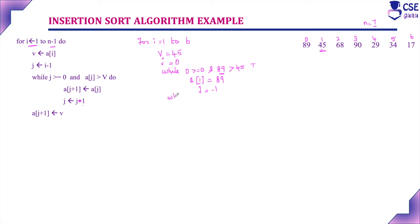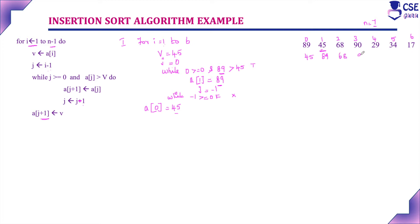Next iteration of the while loop: j is minus 1, which is not greater than or equal to 0, so the condition fails. The loop exits and executes the outer statement: A of j plus 1 — j is minus 1, so minus 1 plus 1 equals 0 — A of 0 position is assigned v, which is 45. So at the end of the first iteration, A of 0 is 45 and A of 1 is 89. The remaining elements 68, 90, 29, 34, and 17 stay as-is.